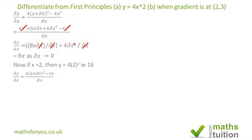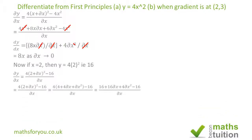As before, Delta Y divided by Delta X becomes 4 times (2 plus Delta X) all squared minus 16, divided by Delta X — replacing X with 2. So we end up with 16 plus 16 Delta X plus 4 Delta X squared minus 16, divided by Delta X.